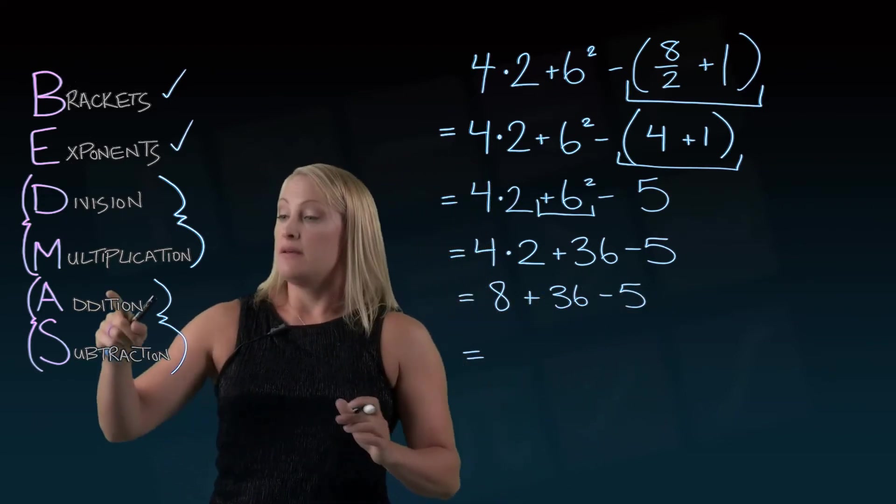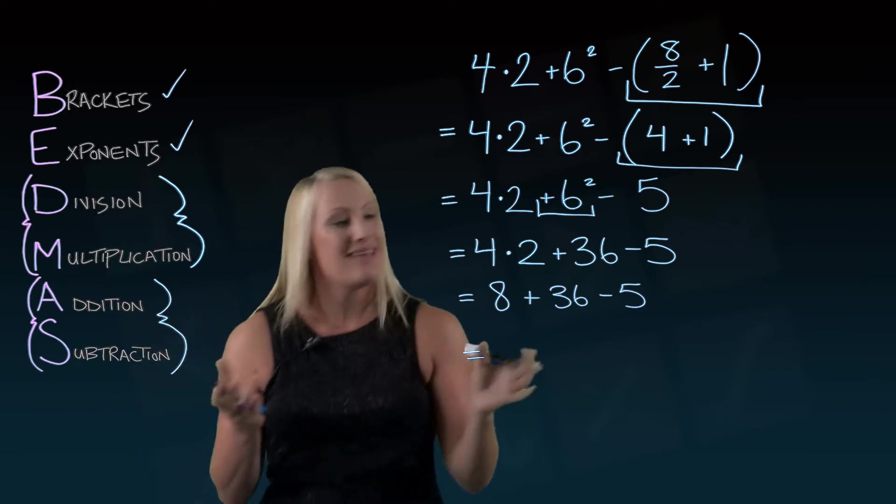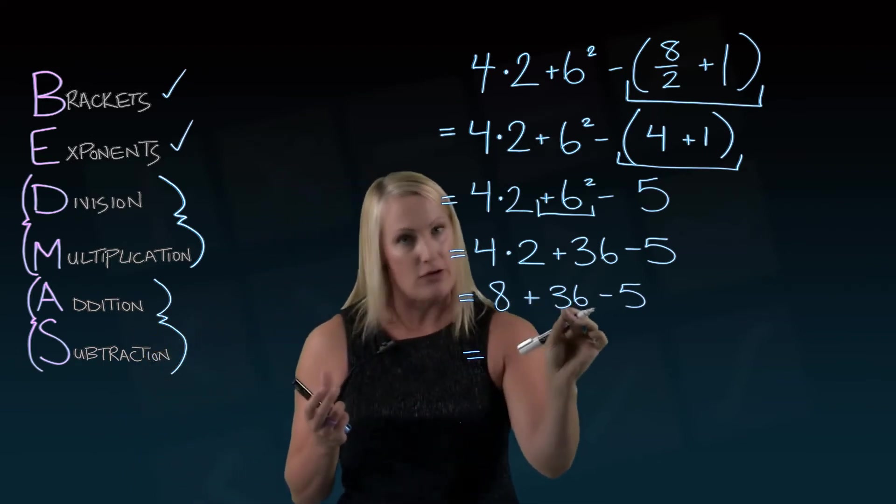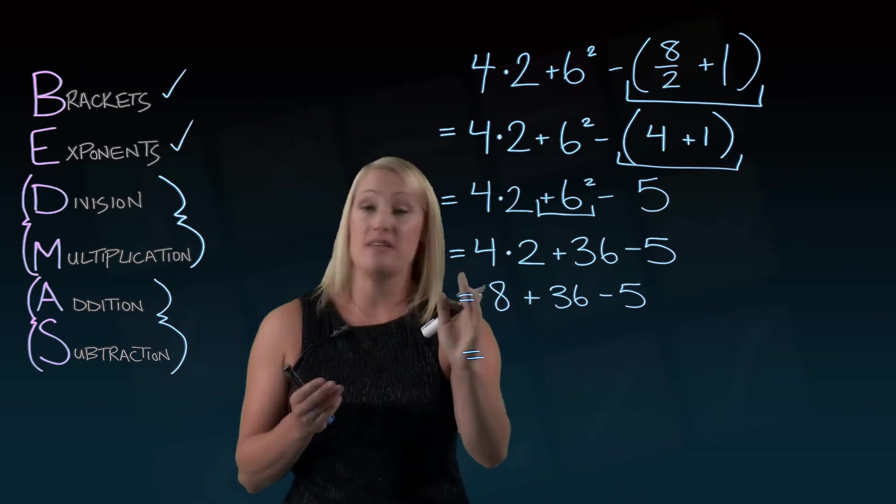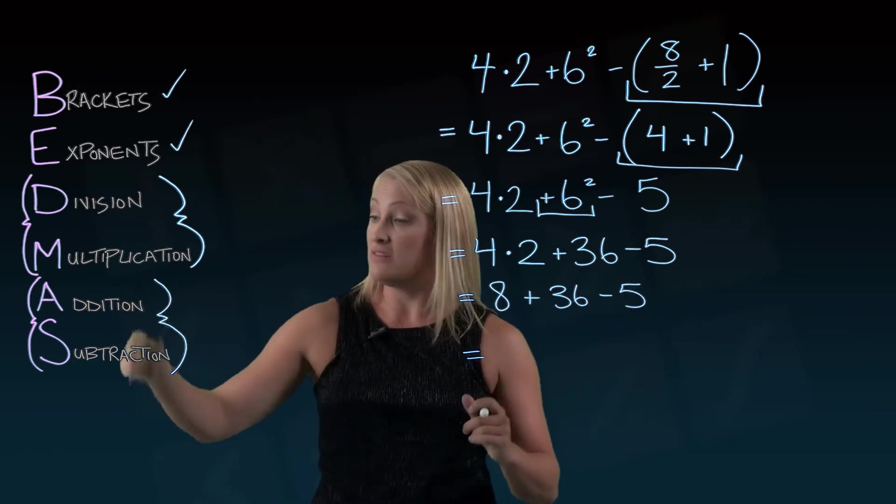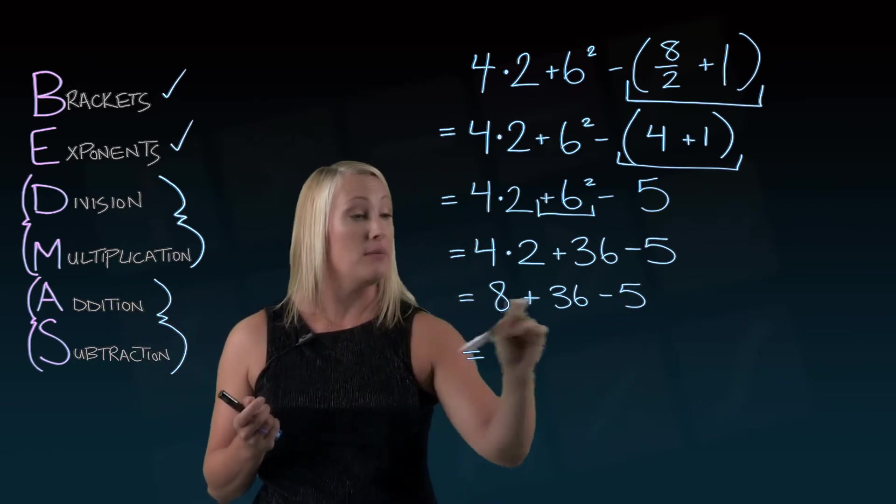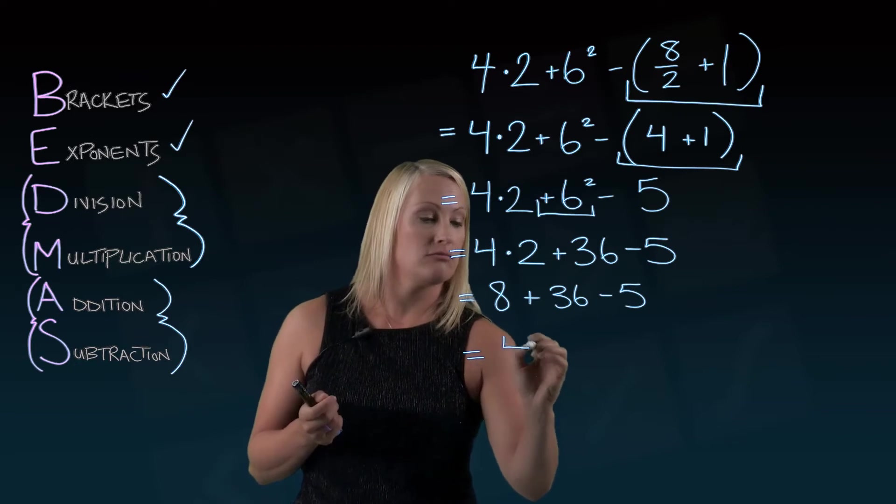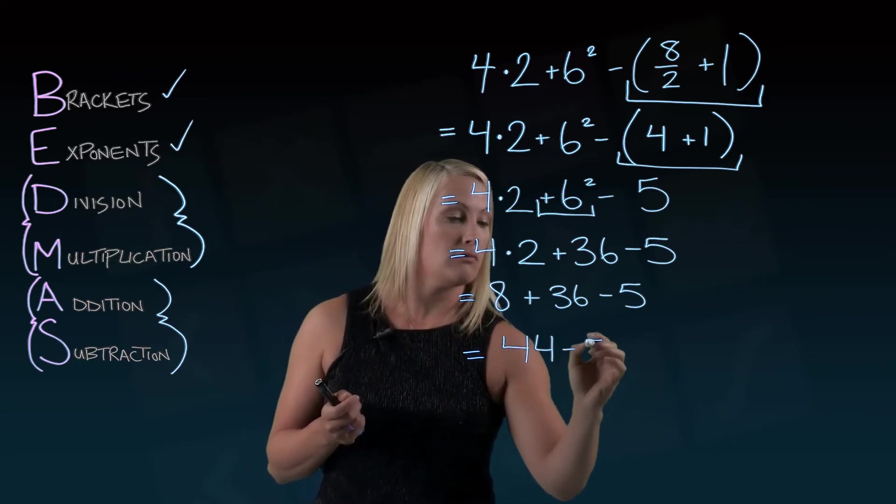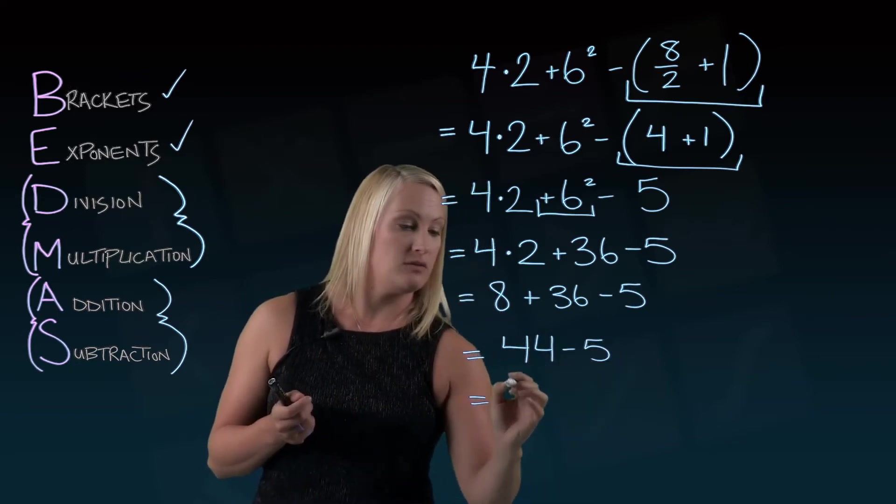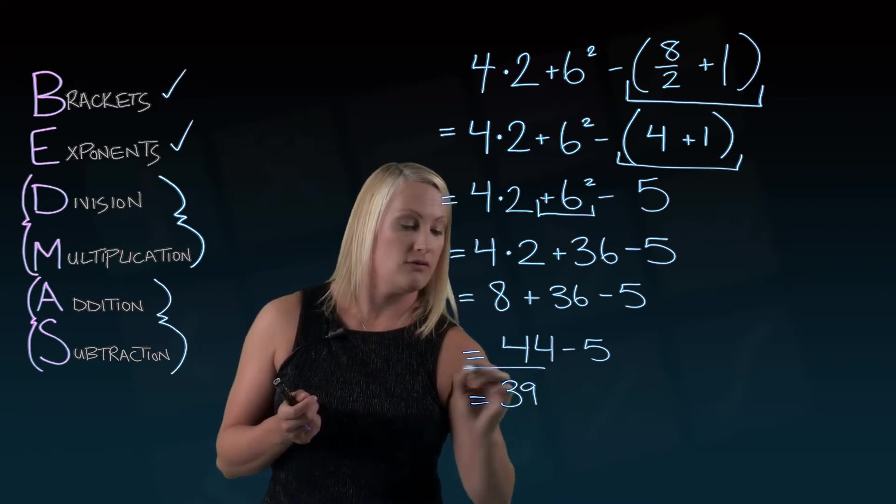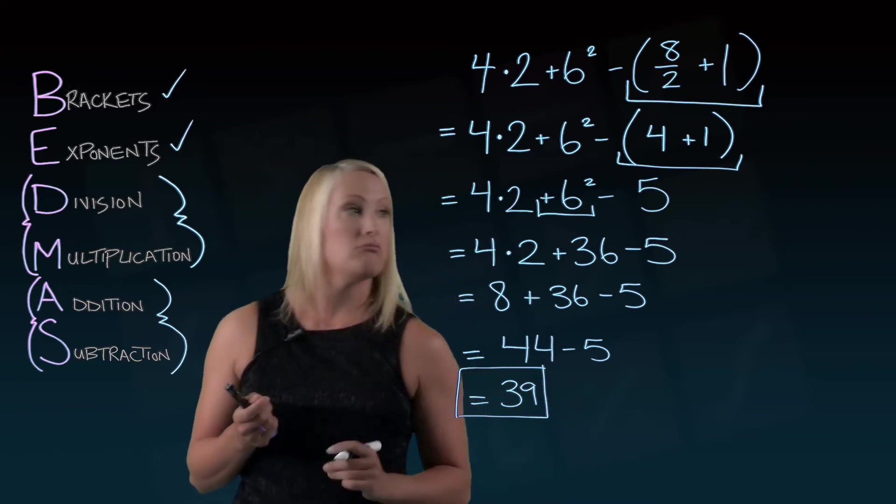And now I've got addition and subtraction. Now in this case, addition does come first before subtraction. But if these were flipped, I still would go left to right because addition and subtraction happen at the same time. 8 plus 36 is 44. And then I'm going to do that last subtraction. And I've got a final answer of 39.